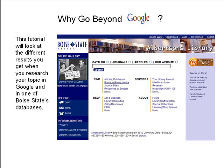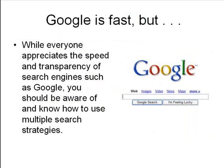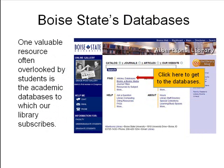This tutorial will look at the different results you get when you research your topic in Google and in one of Boise State's databases. While everyone appreciates the speed and transparency of search engines such as Google, you should be aware of and know how to use multiple search strategies. One valuable resource often overlooked by students is the databases of academic articles to which our library subscribes.